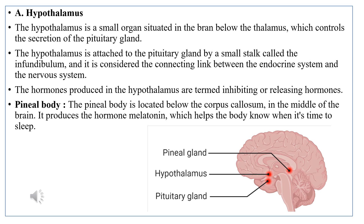The hypothalamus is attached to the pituitary gland via a small stalk called the infundibulum, which serves as a connecting link between the endocrine system and the nervous system. The hypothalamus is present below the thalamus and is a very small organ. The hormones produced in the hypothalamus are called inhibitory hormones or releasing hormones, and this is where the endocrine system starts.